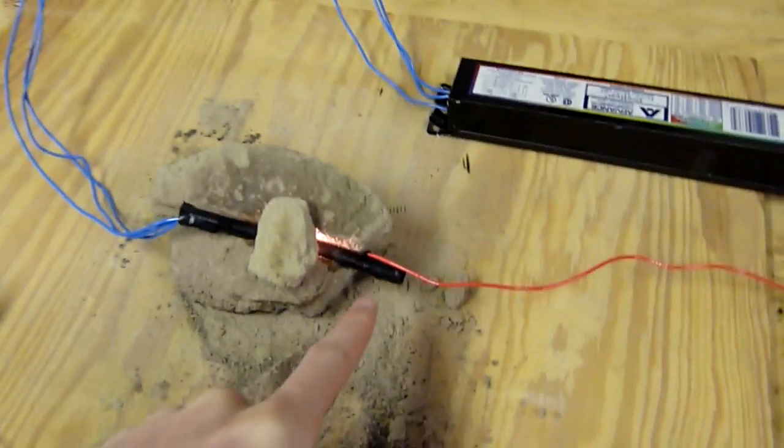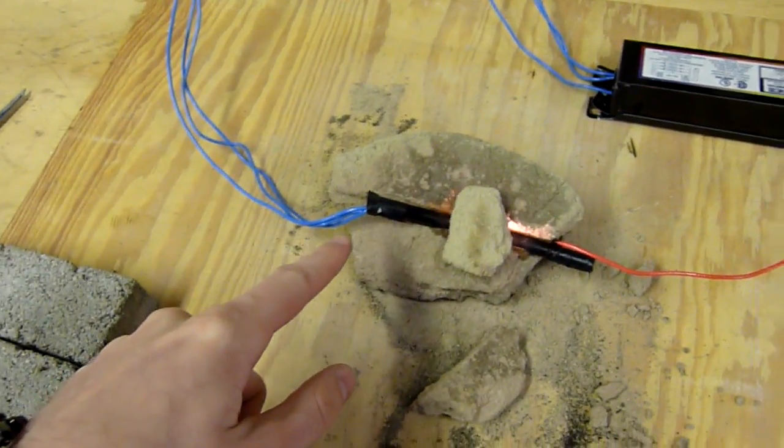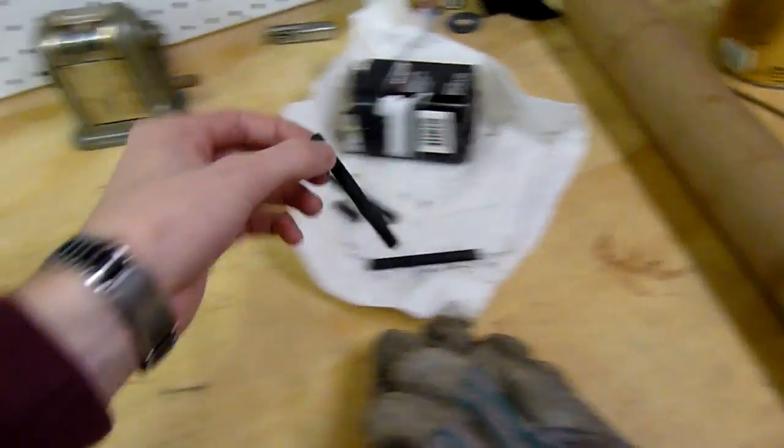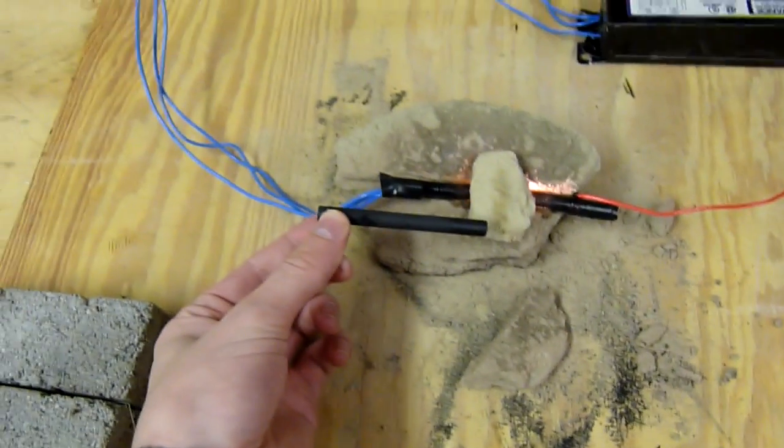Yeah, eventually the tape starts melting around here and the insulation starts melting off the wires. So I'm going to switch over to these carbon rods, which as you can see are much longer.